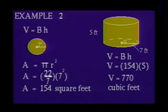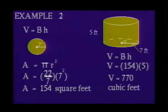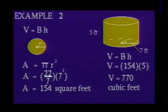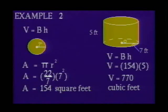Example 2: Find the volume of a circular cylinder with a radius of 7 feet and a height of 5 feet. The formula for the volume of a circular cylinder is V equals capital B times H, where capital B is the area of the base and H is the height. The base of this cylinder is a circle, so we must calculate the area of the circle first using A equals pi R squared. Substituting 7 for R and using 22/7 for pi, we find that the area of the circle is 154 square feet. Substituting 154 for capital B and 5 for H, the volume of the cylinder is 770 cubic feet.